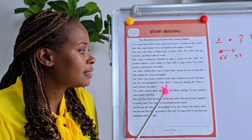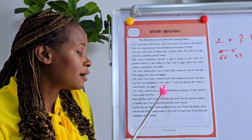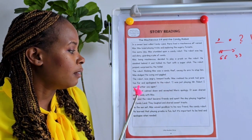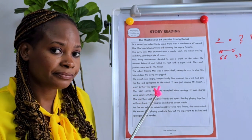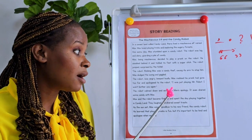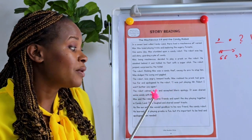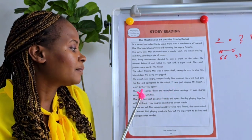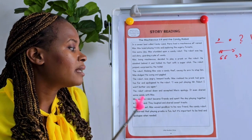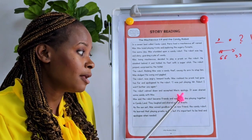Max said: 'Sorry, I was just playing, Mr. Robot. I won't bother you again.' The robot calmed down and accepted Max's apology.